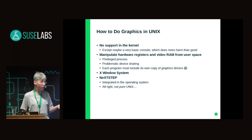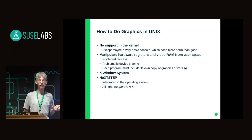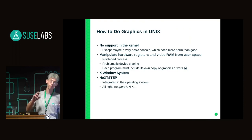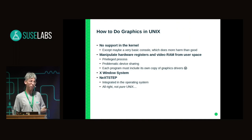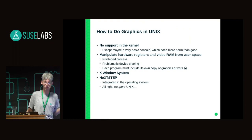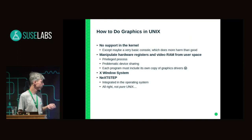The only other option was NeXTSTEP — the predecessor of Mac OS. It was integrated with the kernel: you had a Mach-based microkernel, and part of that operating system itself was a graphical user interface. It was not pure Unix — it did use some Unix, but was a separate thing. You could not use it for a different Unix variant; it was bound to the Mach microkernel.